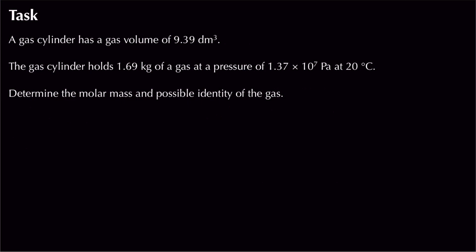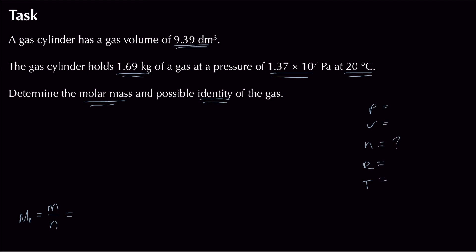A gas cylinder has a volume of 9.39 dm³ and holds 1.69 kg of a gas at a pressure of 1.37 × 10⁷ Pa and 20°C. We're asked to determine the molar mass and possible identity of the gas. To find molar mass we need moles, so we'll use the ideal gas equation first.